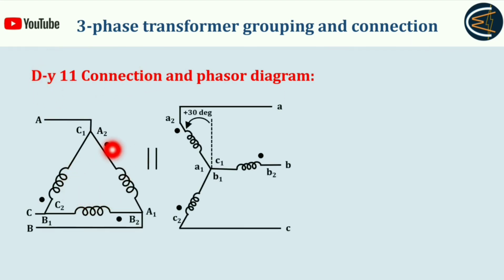side is delta connected and secondary side is star connected. As you can see from this configuration, there is an anticlockwise shift of positive 30 degrees in order to make them parallel. See, A phase and